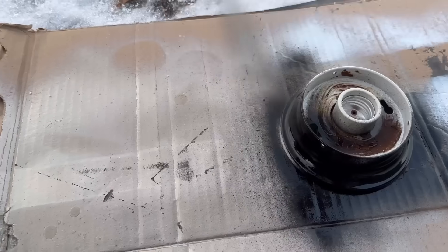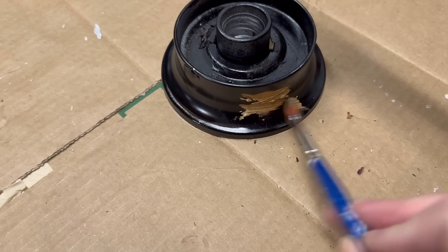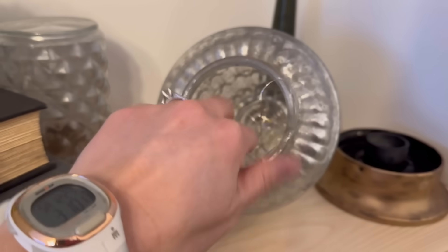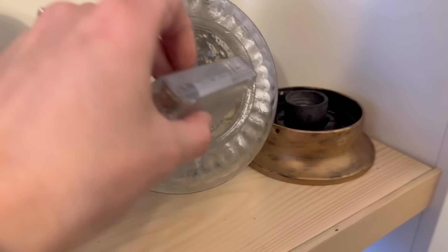I sprayed the light fixture base black. Once dry, I painted antique gold rub and buff on it, leaving some of the black showing. Once dry, I added battery fairy lights.